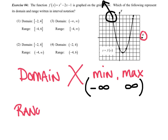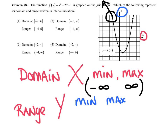Let's talk range — thinking y values. We need a y min and a y max. The minimum y value is this lowest point, which has a height of negative 4. And how high does this graph go? It goes up forever, so I use positive infinity. I had a solid closed circle at negative 4, so I bracket that in. Infinity is not a number I can count to, so it gets a parenthesis: [-4, +∞). There's our domain and range.